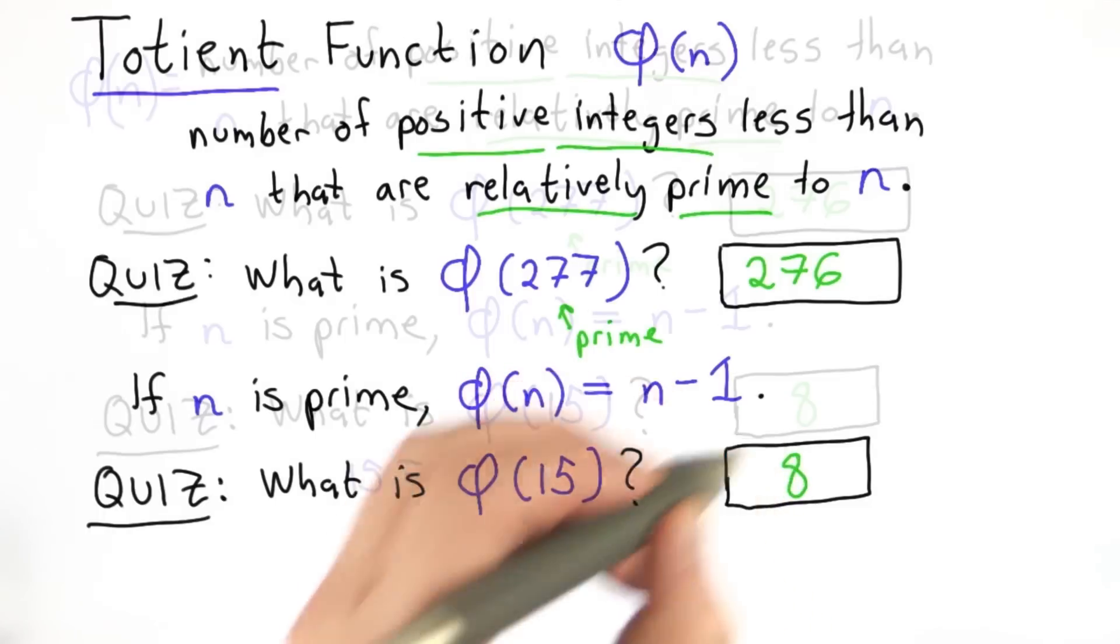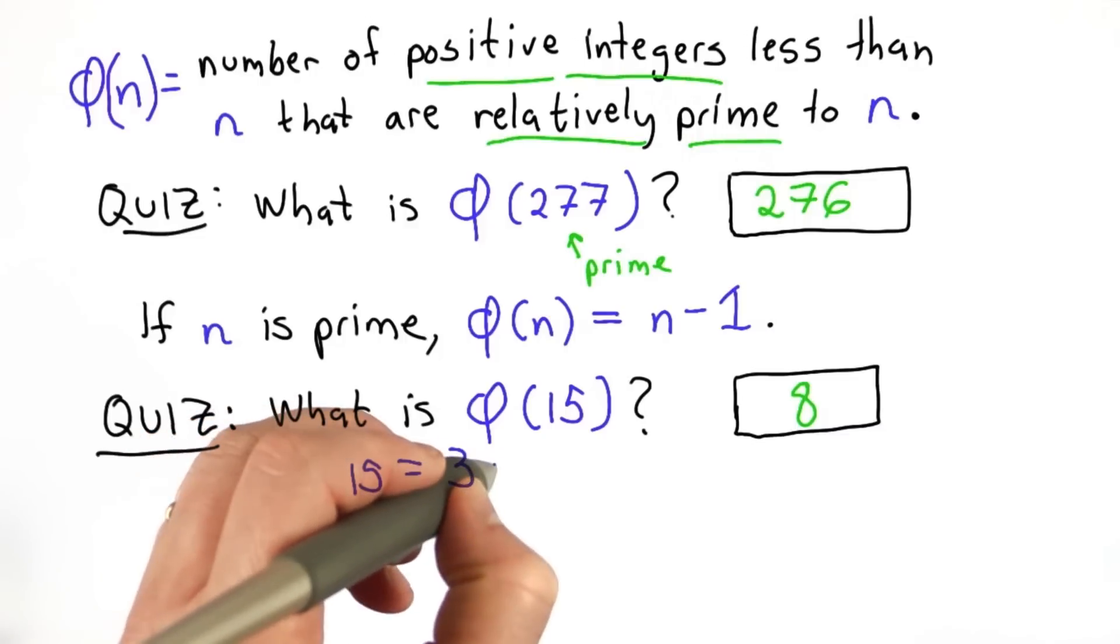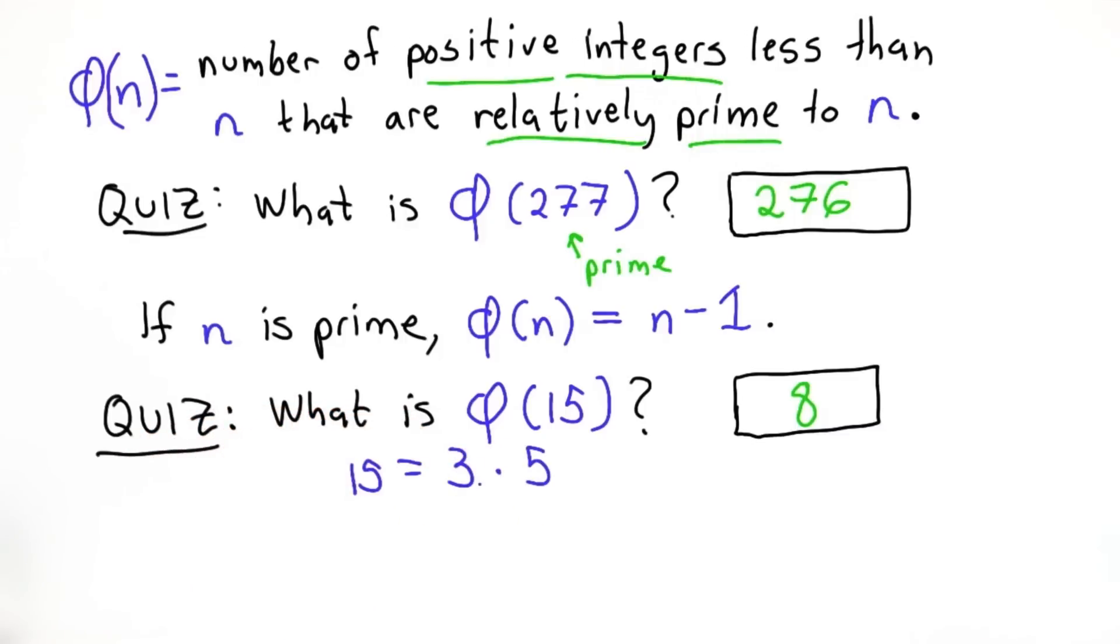The answer is 8. The easy way to see that is to observe that 15 is 3 times 5. It's a composite number that can be broken down into two primes.